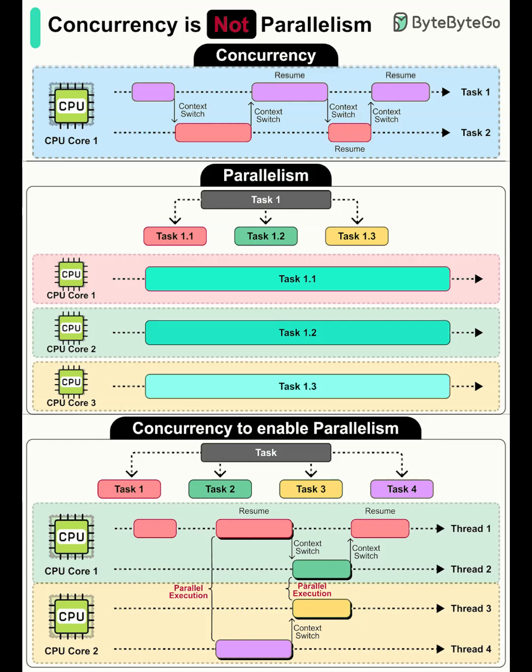How do they work together? Concurrency and parallelism are different, but they complement each other. A well-designed concurrent program manages many tasks efficiently, and when the hardware provides multiple cores, those tasks can also run in parallel. Think of it like lanes and cars: concurrency is organizing lots of cars so traffic keeps moving; parallelism is opening more lanes so more cars move at the same time. The best systems do both — organize the work well and use all available lanes.